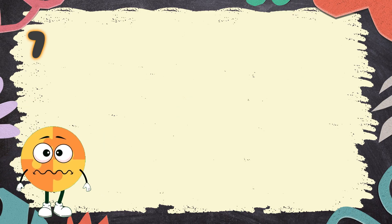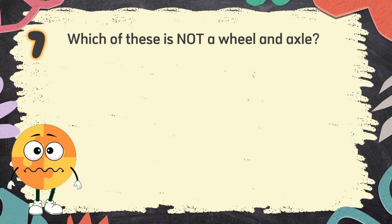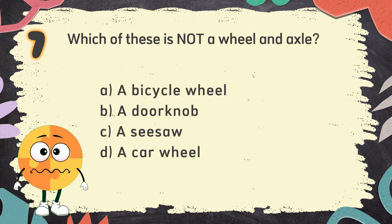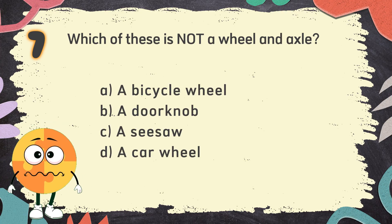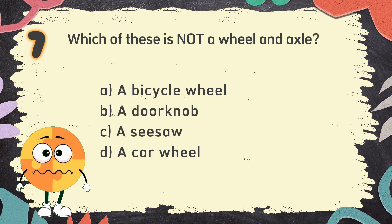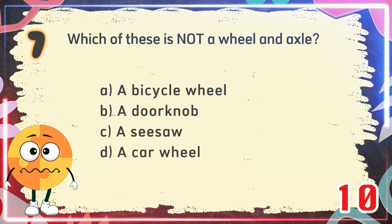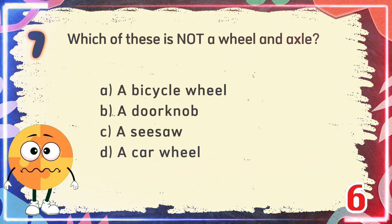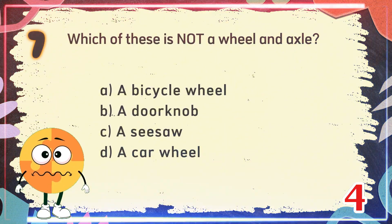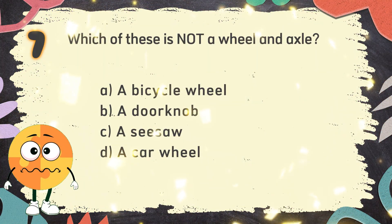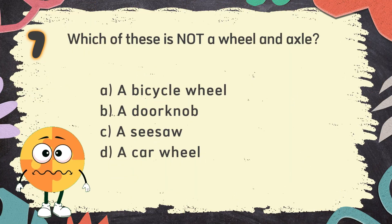Number 7. Which of these is NOT a wheel and axle? The choices are: A. A bicycle wheel. B. A door knob. C. A seesaw. D. A car wheel. The correct answer is C. A seesaw.